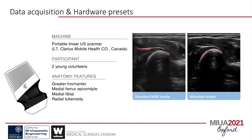For testing, a Clarius portable scanner L7 was used, and data were collected from two young volunteers on four anatomical features: greater trochanter, medial femoral epicondyle, medial tibia, and radial tuberosity. The scanner has a series of presets, each highlighting different image features. We are not entirely sure what the actual effect of these presets is, but after preliminary tests, we decided to test one setting initially suggested for ocular examinations and compare the result with the standard MSK mode.